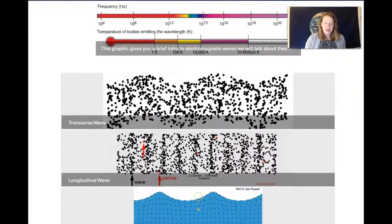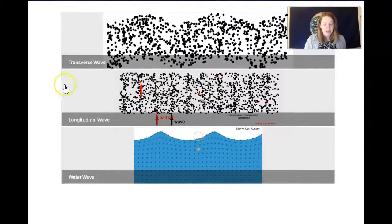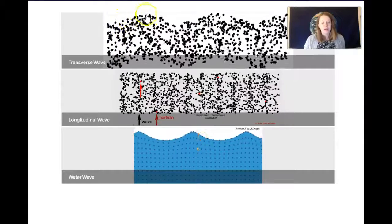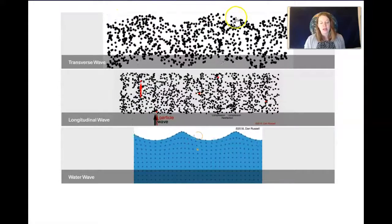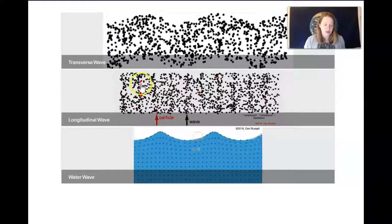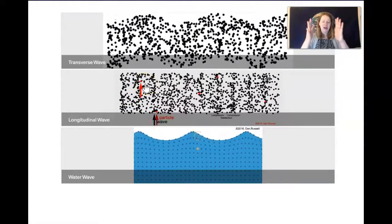So putting that in an animation, we can see it better when we look at it like this. So we've got our transverse wave where the particles are moving up and down, but the energy is propagating to the right. And we've got our longitudinal wave where those particles are kind of shifting back and forth in the air.